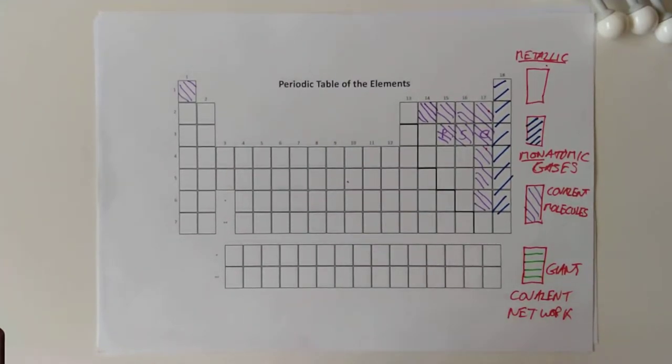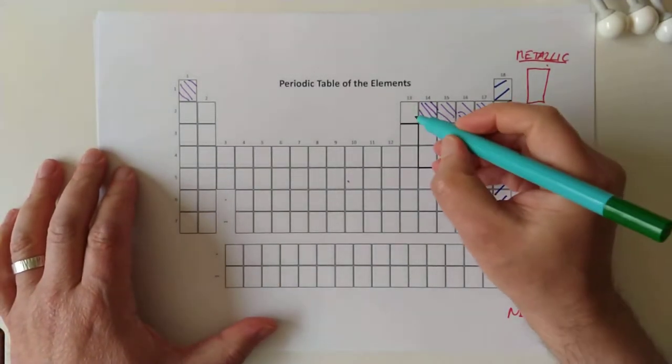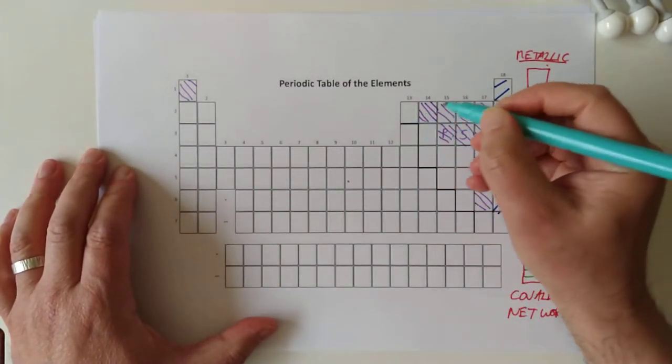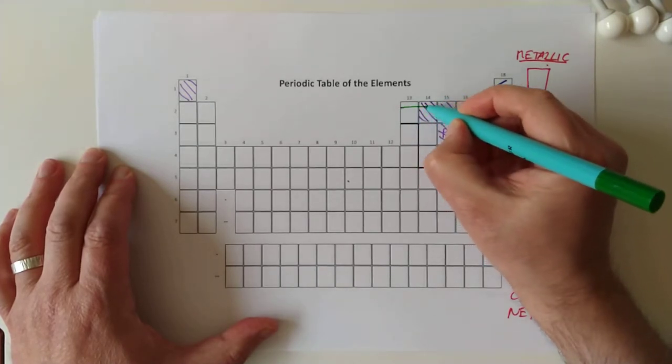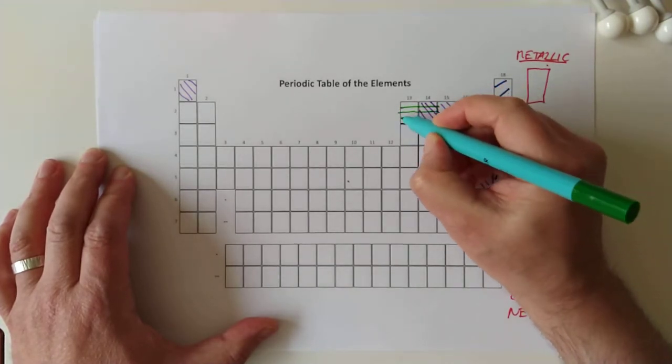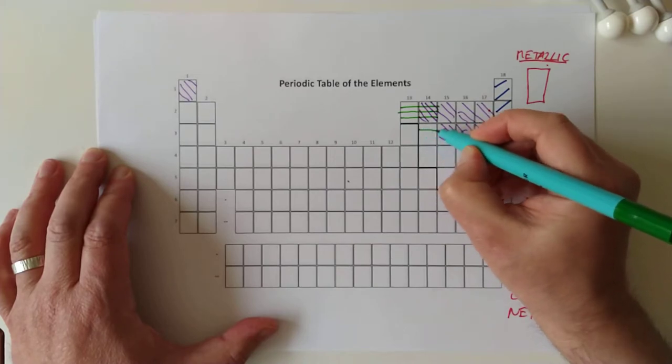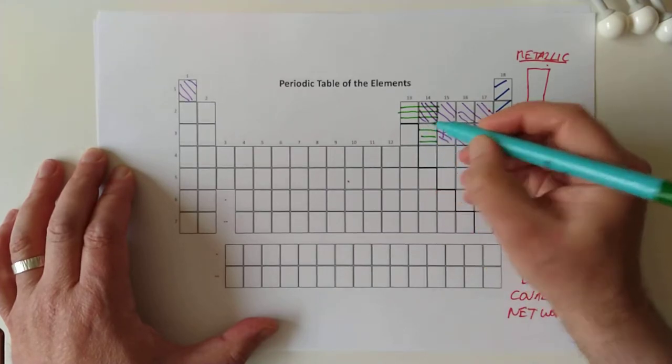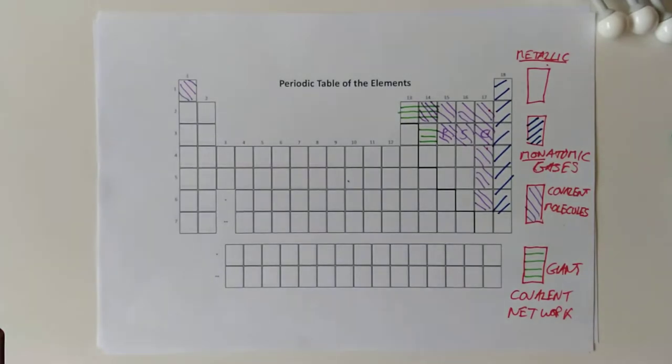Now, there are only three elements you'll be glad to know guys, and they're right next to each other, so you can't really forget them. They are boron, carbon, and silicon. So that's your three elements that form giant covalent networks.